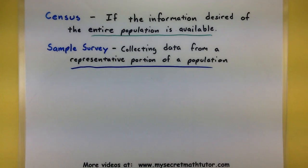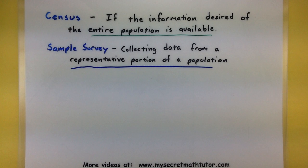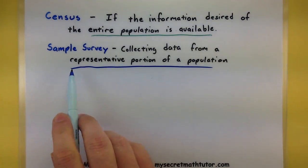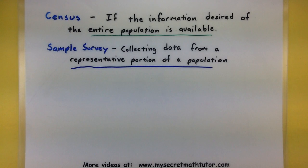The idea is we want to know about the population, but we can't ask every little piece, so we're going to try and find a good representative. The hard part is finding that good representative, and that's why there are so many different types of sampling. So let's go ahead and check out a few of those different types.